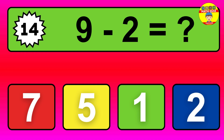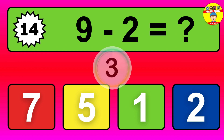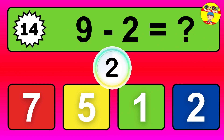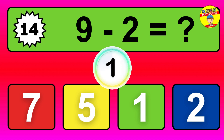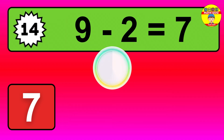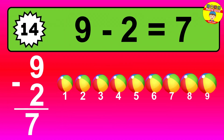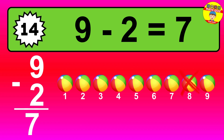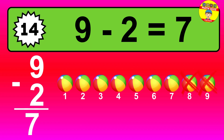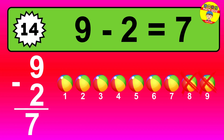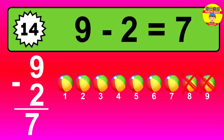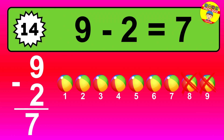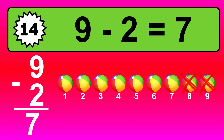Question fourteen: nine minus two equals what? The answer is nine minus two is seven. Let's count it. One, two, three, four, five, six, seven.